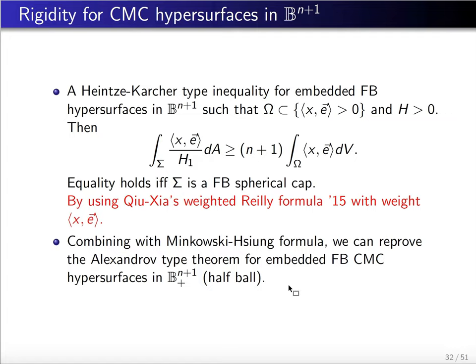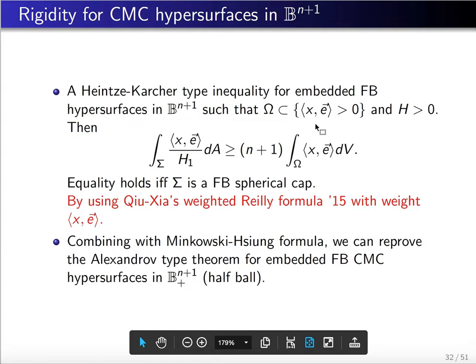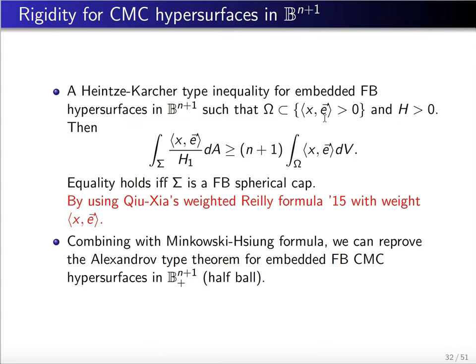We can also use this Minkowski-type formula to reprove the Alexandrov-type theorem. For this, in addition to the Minkowski formula, we need a Heintze-Karcher-type inequality. For an embedded free boundary hypersurface in a ball such that the hypersurface lies in the half-ball — given by x·e being positive — the Heintze-Karcher-type inequality states that the integral of x·e over the hypersurface divided by H₁ is greater than or equal to (n+1) times the integral over omega of x·e. The equality holds if and only if sigma is a free boundary spherical cap.